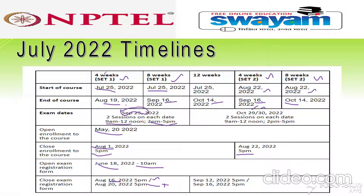For four-week and eight-week Set 1, register on or before August 16th; up to August 20th with a fine amount. For 12-week, four-week Set 2, and eight-week Set 2, registration closes September 12th, and with fine, registration closes September 16th.